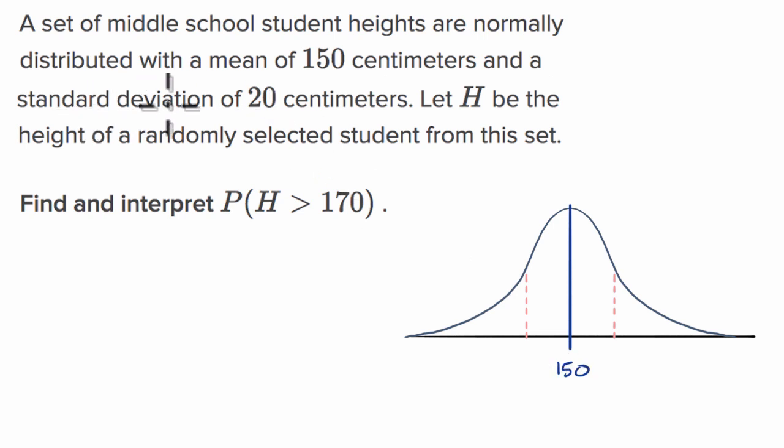And they also say that we have a standard deviation of 20 centimeters. So 20 centimeters above the mean, one standard deviation above the mean is 170. One standard deviation below the mean is 130.